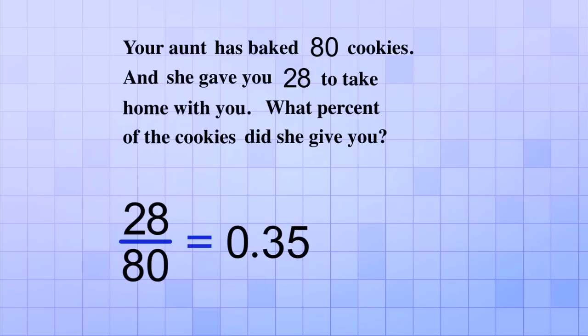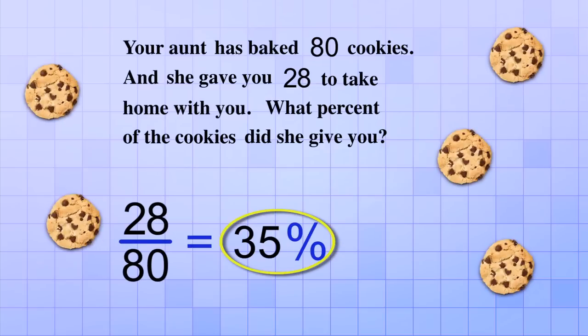And now, to go from the decimal form to a percent, we just move the decimal two places to the right. That gives us 35. So when our aunt gave us 28 out of the 80 cookies, she gave us 35% of the cookies that she baked.